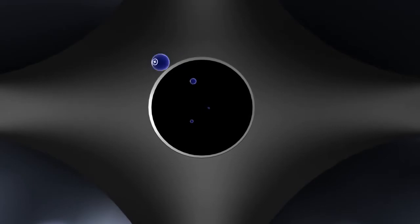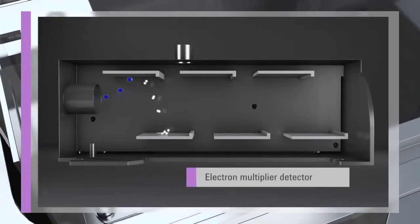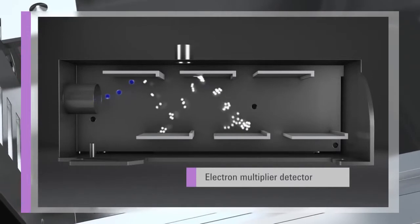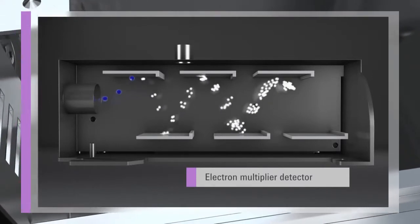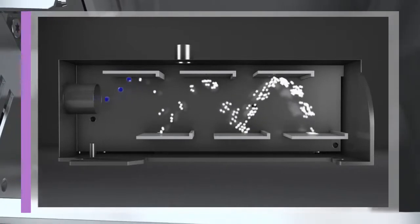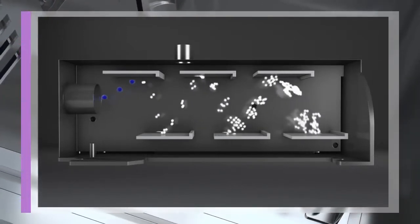The ions selected by the quadrupole are passed to the simultaneous dual-mode electron multiplier detector. The detector covers a full nine orders dynamic range, allowing trace and major elements to be measured in a single run. The 100 microseconds minimum dwell time also makes the 7700 the ultimate system for time-resolved analysis, such as laser ablation or chromatography.